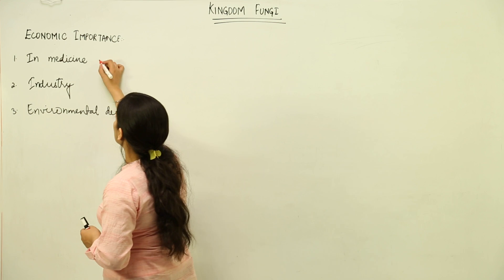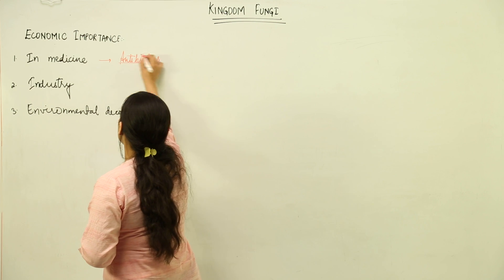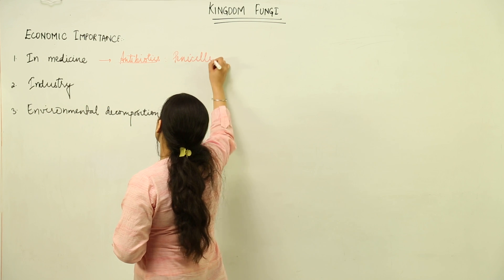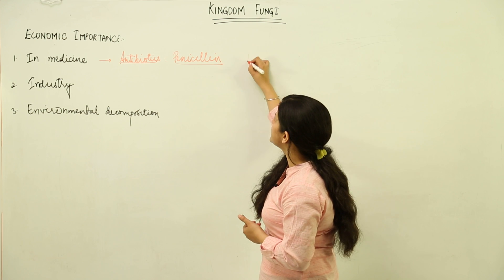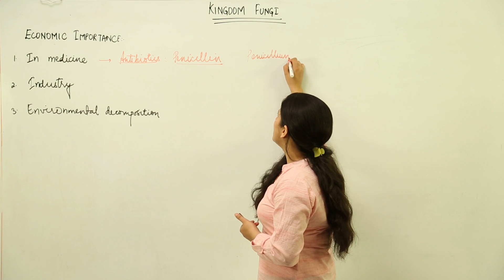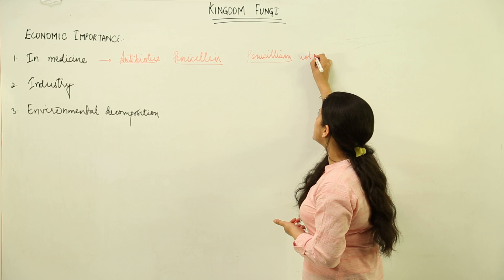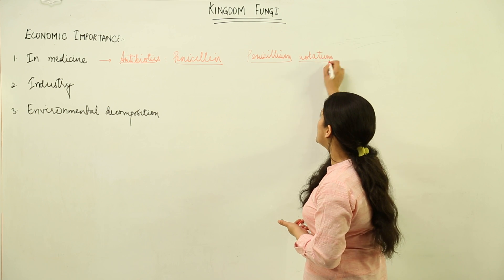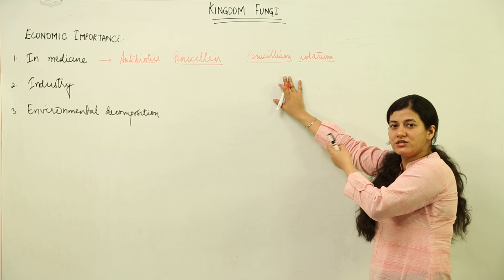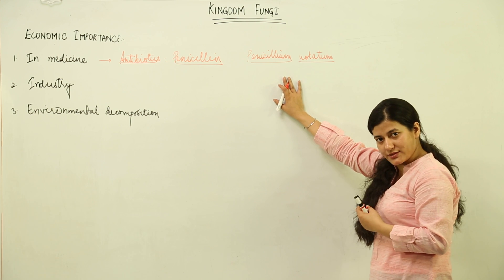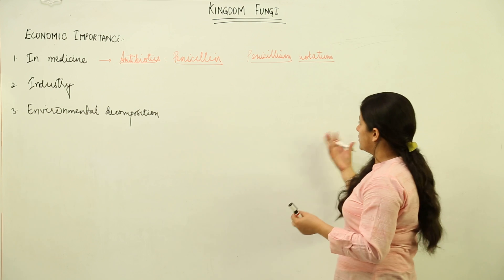In medicine, because fungi are microorganisms, they can be used for the production of antibiotics. The first antibiotic you may have heard of from childhood is penicillin, which has been extracted from the fungi known as Penicillium notatum. Sir Alexander Fleming was the person who extracted it. He observed that wherever Penicillium was present, he could not see the growth of Streptococcus bacteria.